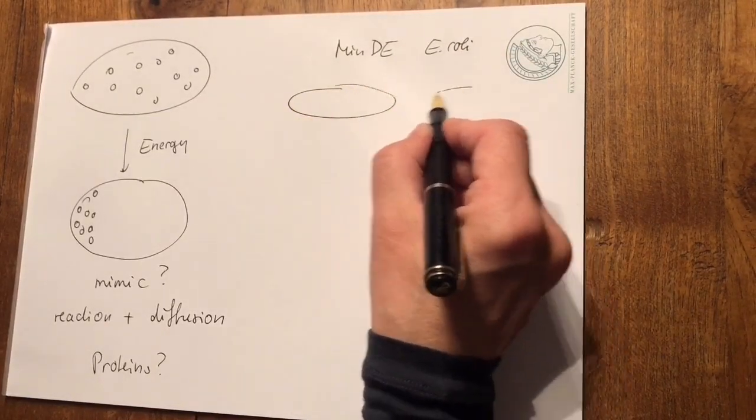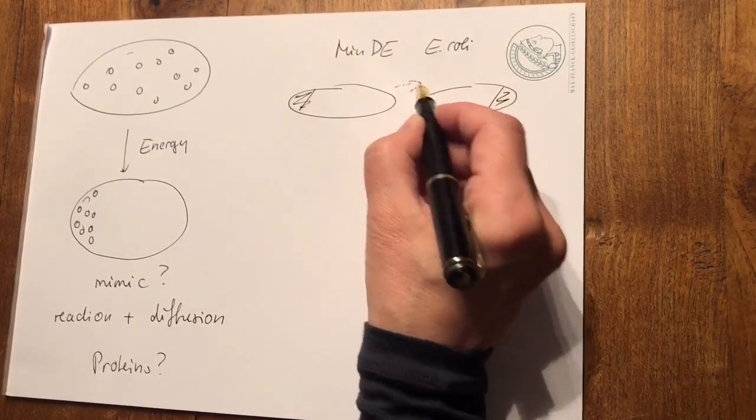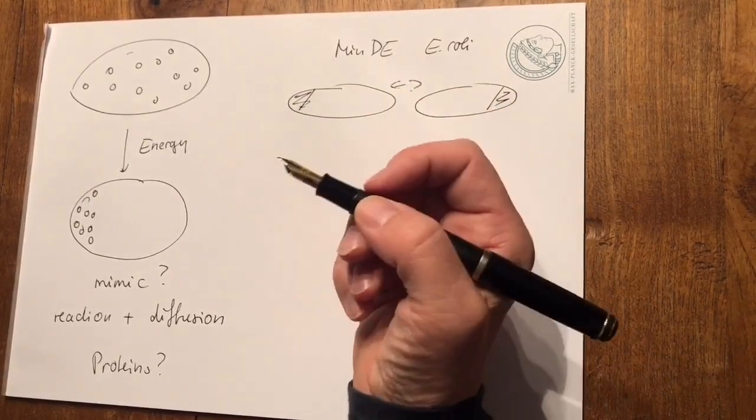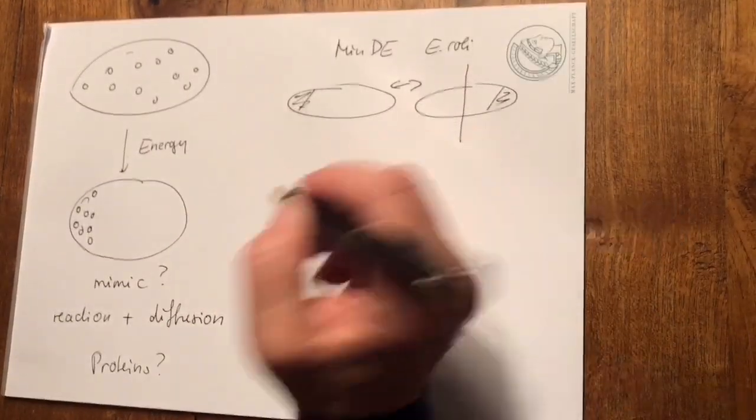It basically oscillates between the two poles of the cell on a minute timescale. And by this positions the division axis for these cells.